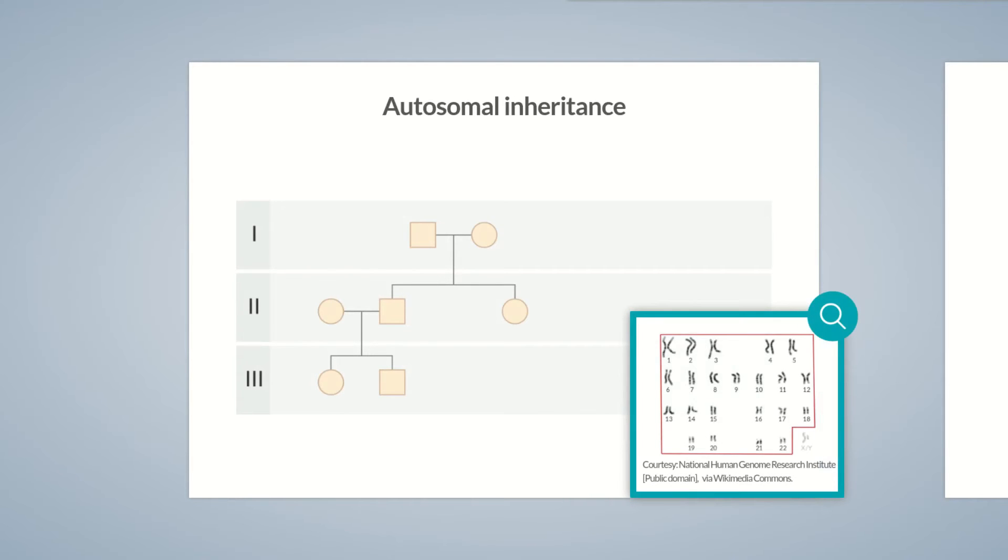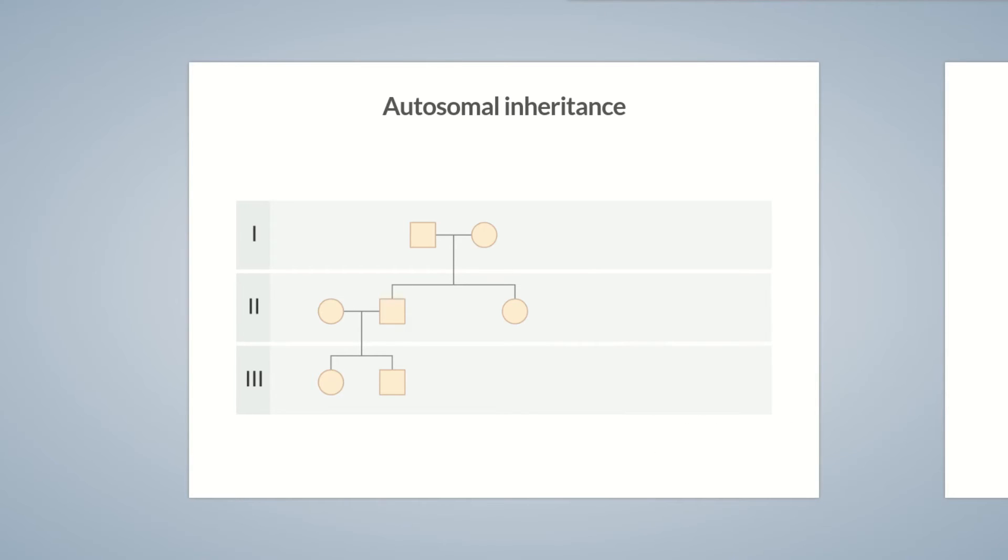Traits inherited independently of sex in families are located on chromosomes known as autosomes. Autosomes are labeled with the chromosome numbers 1 to 22 and are present as pairs in males and females. First, let's look at a simple case of a dominantly inherited allele.